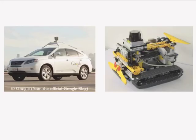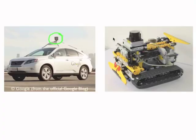We have two systems. One is the Google self-driving car and this is our own robotic system. The similarity is that on top you have a LiDAR, and we do have a LiDAR as well. Instead of the bulky Velodyne — one million scan points per second, 70,000 US dollar scanner — we have this small lightweight HOKUYO scanner on top of our robot.